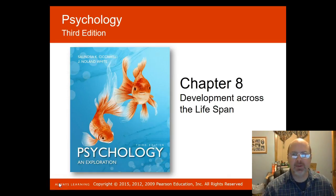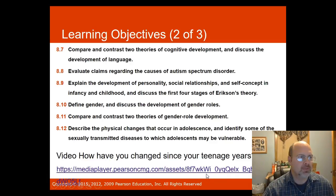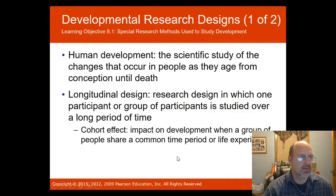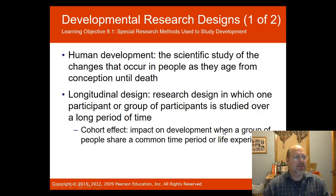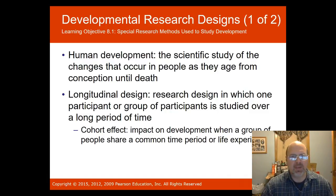Welcome to Chapter 8: Development Across the Lifespan. Human development is a scientific study of the changes that occur in people as they age from conception until death. Today we'll look at some of the changes that people make throughout the lifespan — from prenatal development until death.